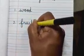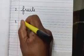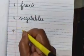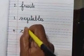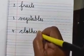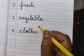Now put number two and write F-R-U-I-T-S Fruits. All the fruits also we get from plants and trees. V-E-G-E-T-A-B-L-E-S Vegetables. We get vegetables from plants and trees. We get clothes, C-L-O-T-H-E-S Clothes.